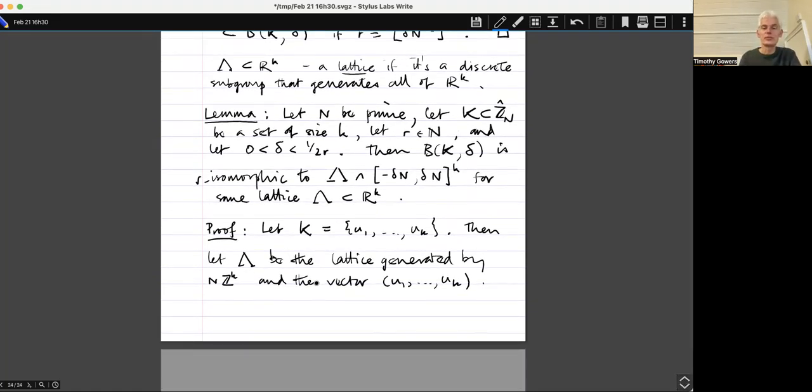So that Lambda would be the lattice generated by N Z to the K and the vector U1 up to UK, which has no non-zero coordinates. So what does Lambda consist of? It actually consists of all integer points that are multiples of U1 up to UK mod N. Because what you can do here, you can, if you want to generate a vector in Lambda, you just pick some multiple of this and you pick some coordinate with, so some vector with coordinates that are multiples of N, and you subtract that from the multiple of this. So you can see in that way, you can get any vector that has coordinates that are, any vector that is a multiple of this, or is congruent to a multiple of this mod N. Let's put it that way. Any vector in Z to the K.